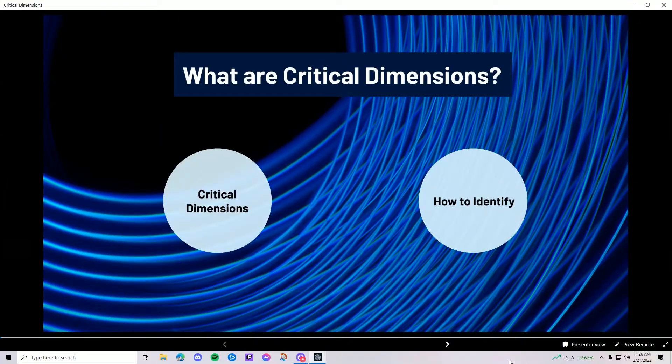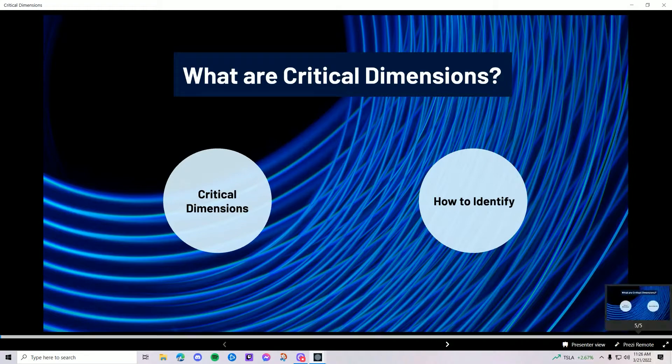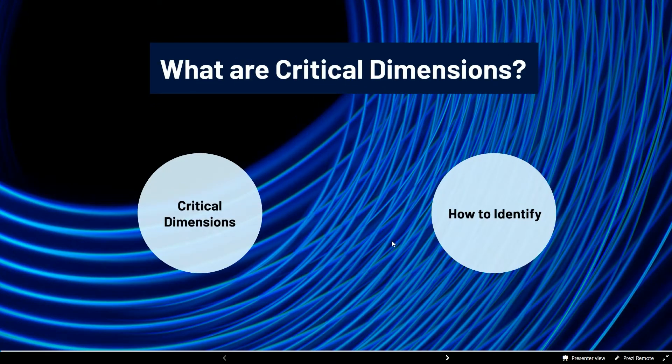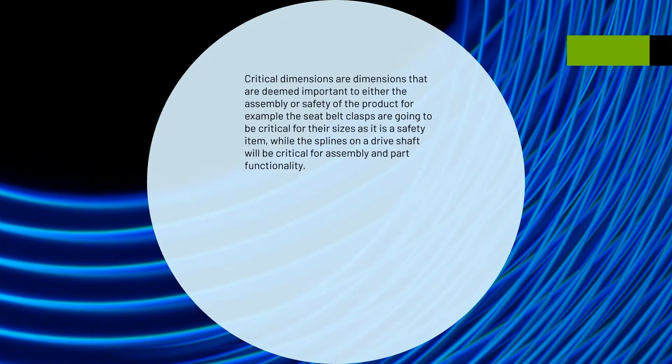So what are critical dimensions? Critical dimensions are dimensions that are deemed important to either the assembly or safety of the product. For example, the seat belt clasps are going to be critical for their sizes as it is a safety item, while the splines on a driveshaft will be critical for assembly and part functionality.